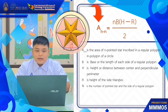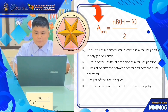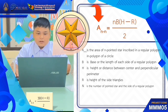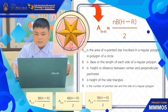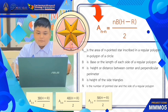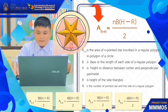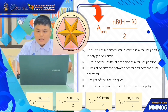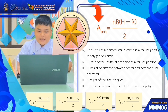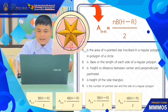The formula for finding the area of a 3-pointed star inscribed in an equilateral triangle: A3 equals one-half times 3 times B times the quantity H minus R. The formula for a 4-pointed star in a square: A4 equals one-half times 4 times B times the quantity H minus R. The formula for a 5-pointed star in a pentagon: A5 equals one-half times 5 times B times the quantity H minus R. The formula for a 6-pointed star in a hexagon: A6 equals one-half times 6 times B times the quantity H minus R.